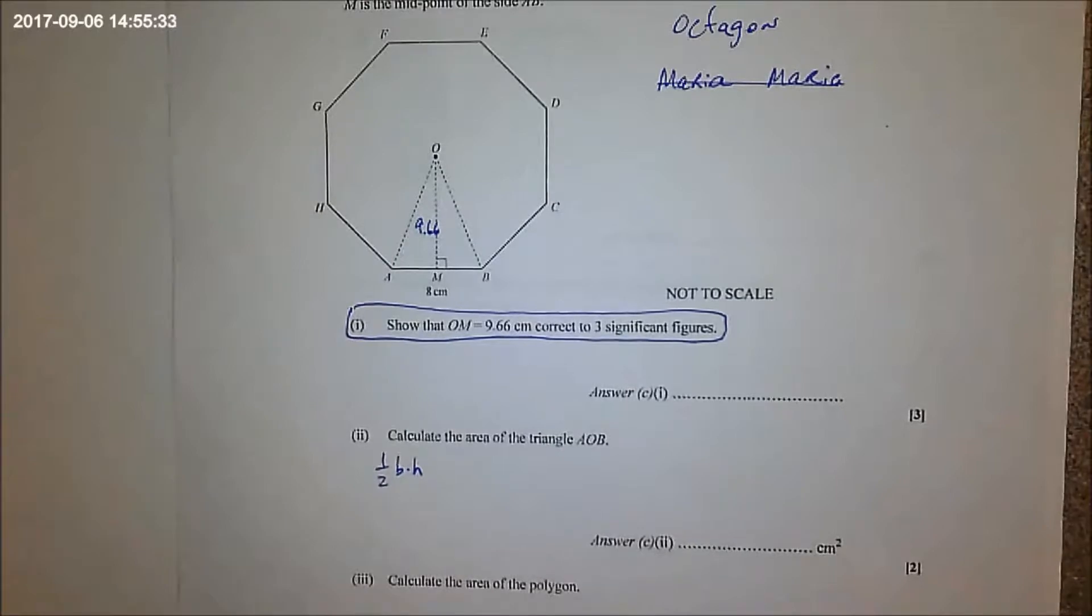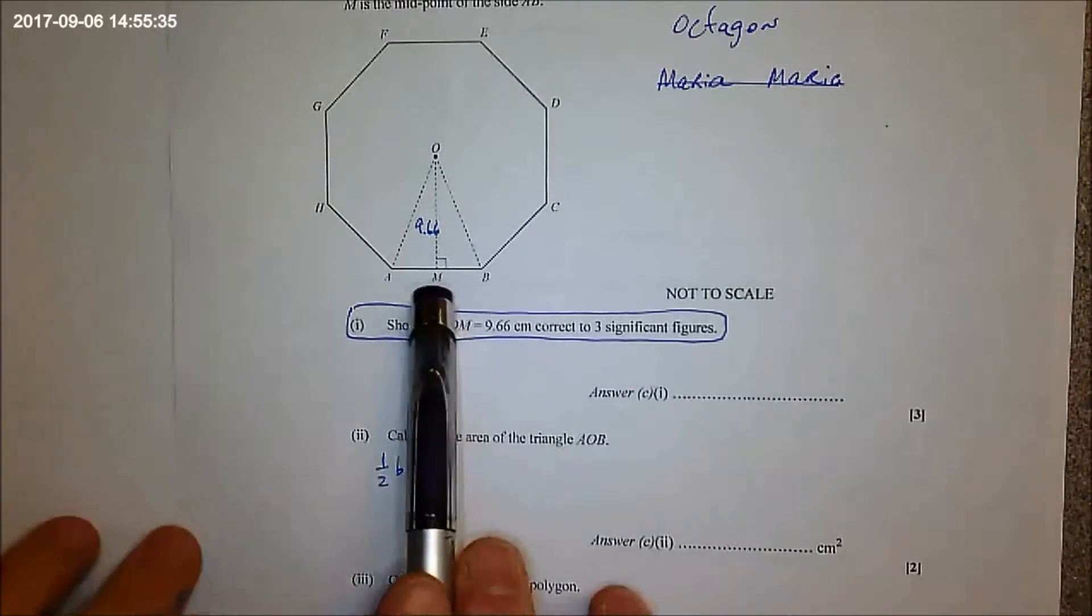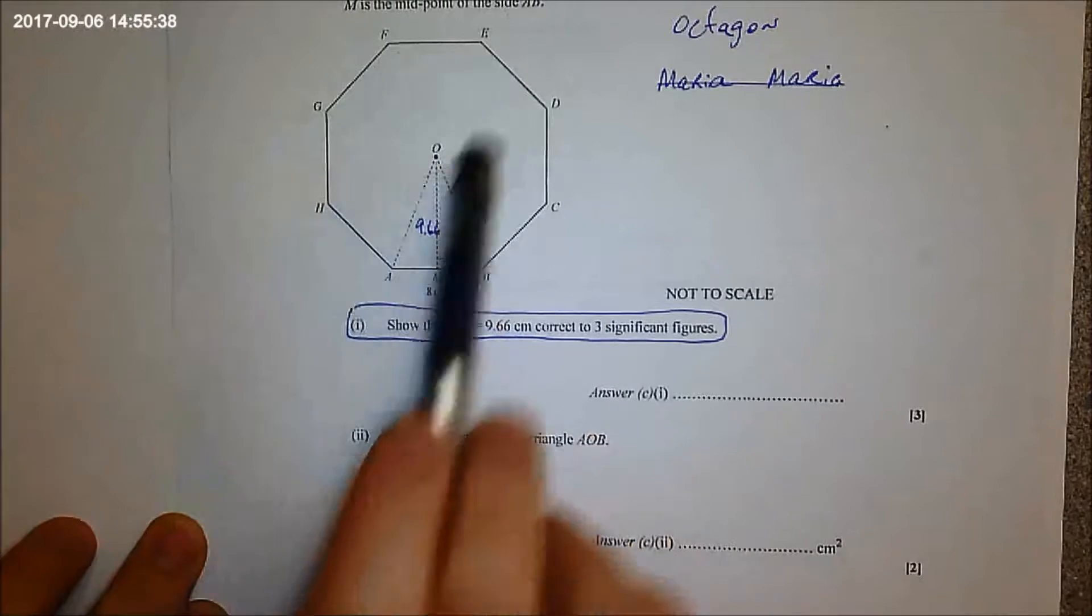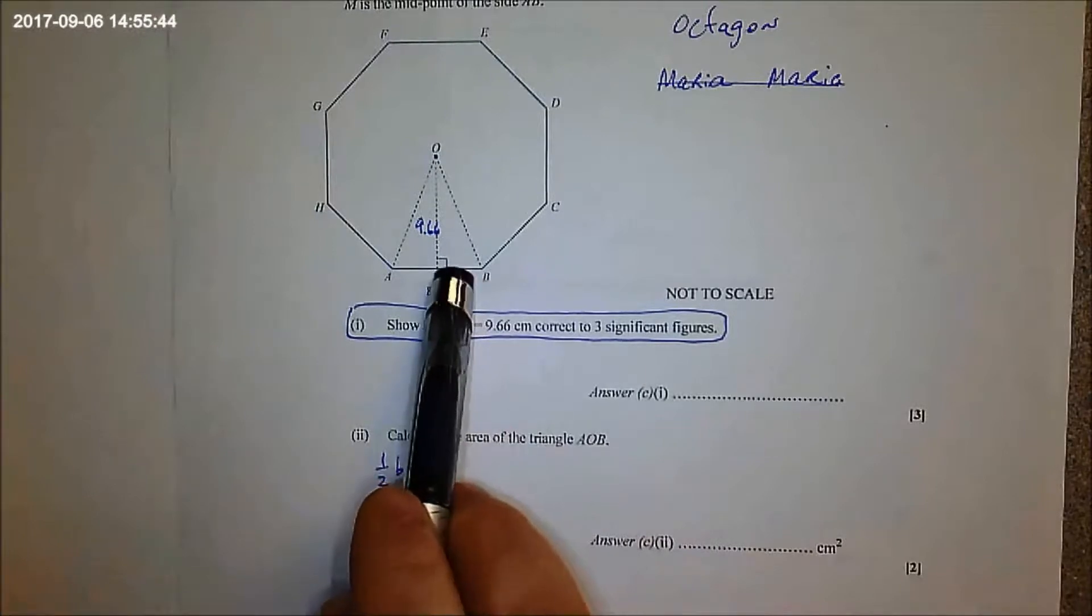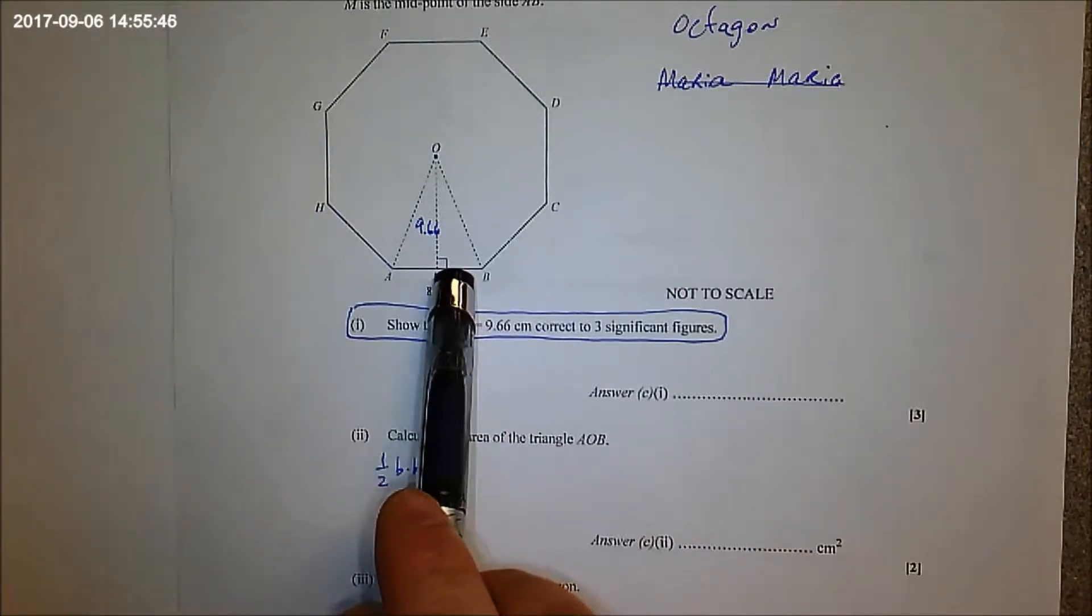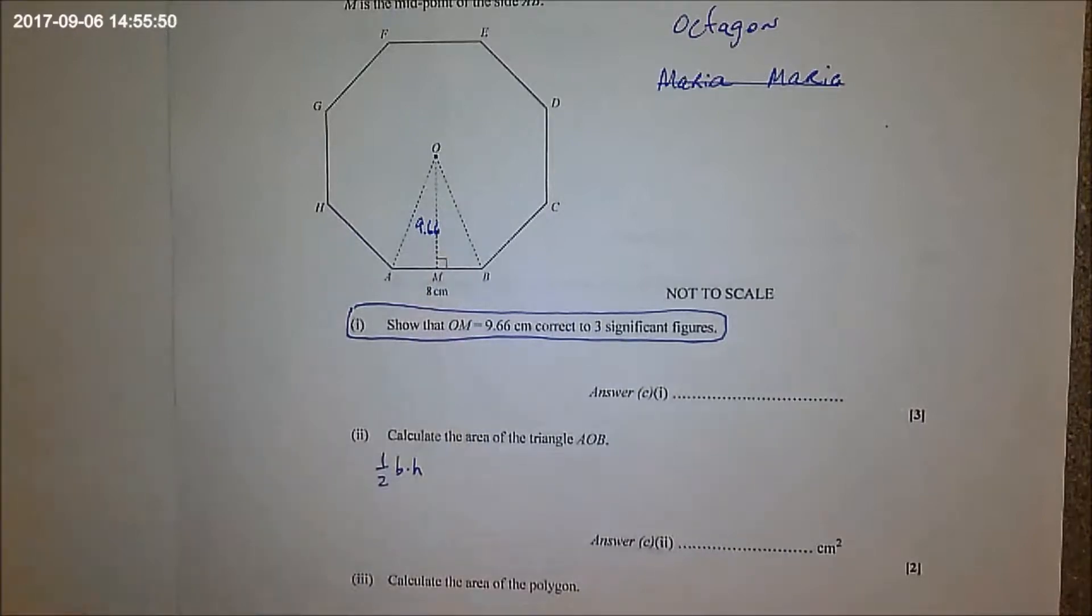Could you get the right answer if you used four? If you do eight, if you say the base is eight, how many of those triangles are in the whole thing? Eight right, because they're all the same. If you said four there would be 16 of them. You could get the same answer either way, it wouldn't matter.